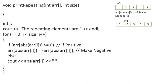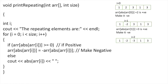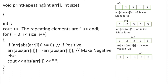When i=1, we check array[abs(array[1])]. Array[1] is -2, absolute of -2 is 2, and array[2] is 3, which is positive, so we make it negative — 3 becomes -3. When i=2, we check array[abs(array[2])]. Array[2] is -3, absolute of -3 is 3, and array[3] is 1, which is positive, so we make it negative — 1 becomes -1.